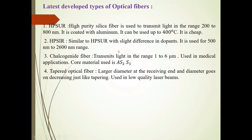HPSIR is used for the 400 to 500 nanometer to 2600 nanometer range. The third type is chalcogenide optical fiber, which transmits light in the range of one to six micrometers.